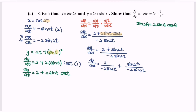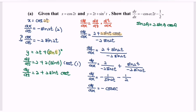Simplify the situation. So dy/dx equals negative 1 over sine 2t minus 1 over 2. Finally, as we know the trigonometric ratio 1 over sine is cosecant, so dy/dx equals negative cosecant 2t minus 1 over 2, and we have shown the situation.